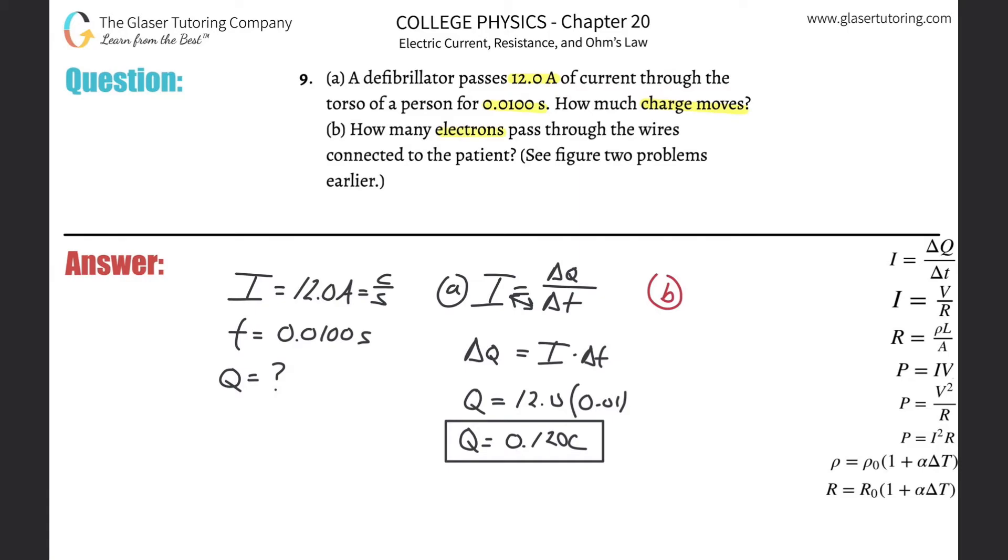How many electrons pass through the wires connected to the patient? So remember, if you know the total amount of charge, you can find the number of electrons because you know that 1.6 times 10 to the minus 19 coulombs is the charge of one particular charged particle, be it electron or be it a proton, right?